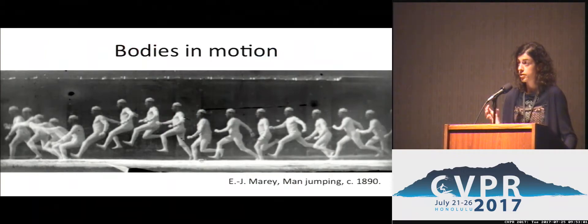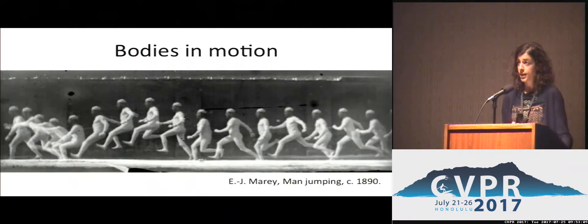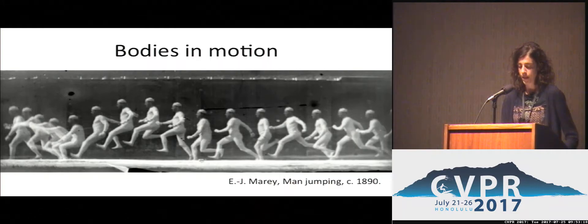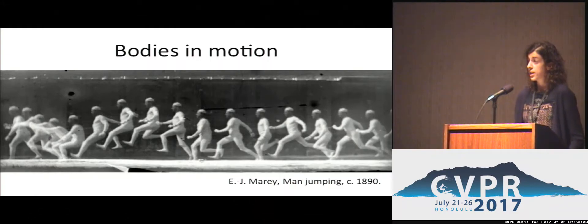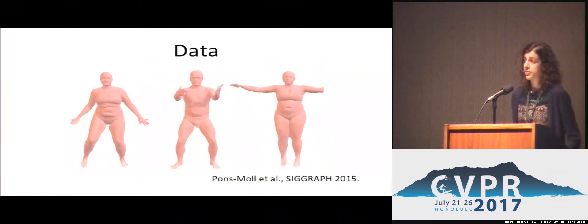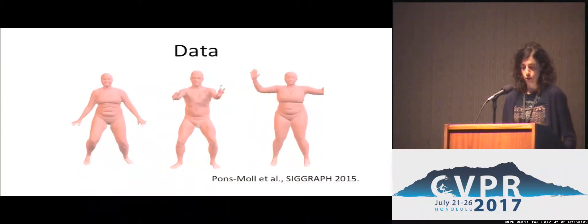The problem of capturing and modeling bodies in motion is important for many tasks in computer vision — for example, for tracking or for learning how to classify motions. Attempts to address this problem date back to the 19th century, where human performances were captured as sequences of 2D images. But we live in a world of 3D shape, so gradually technology improved, and nowadays we have devices able to reconstruct 3D surfaces or scans in motion at a high frame rate.